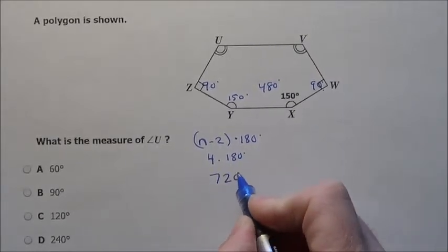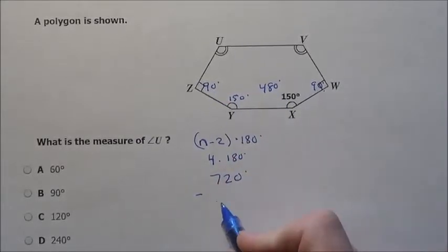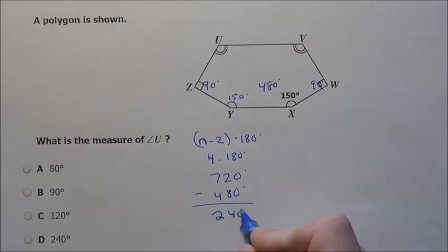4 times 180, that's 720 degrees. When we subtract what we already have there, which is 480, that leaves me 240 degrees.